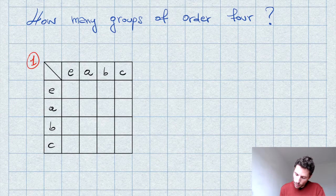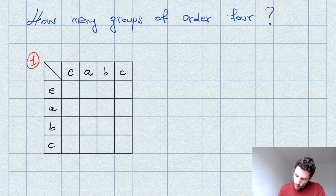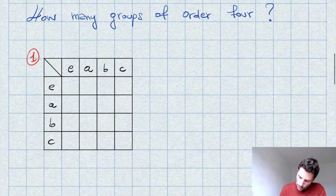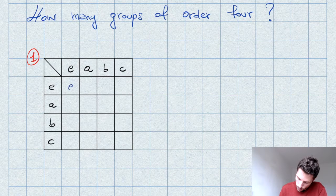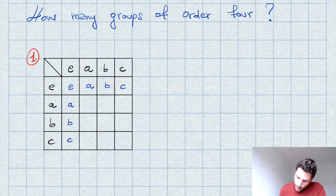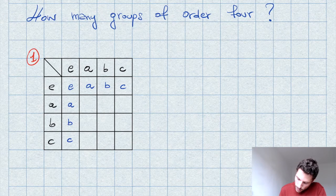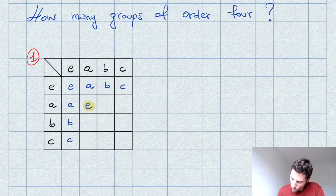The same statement holds for the columns. So let's move on and list all possible groups with exactly four elements. Here I have a multiplication table with four elements, one of which must be the identity element E. For the first row and first column we have no real choice, since the identity element acts as an identity. I will keep track of my choices by drawing a decision tree.